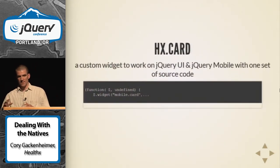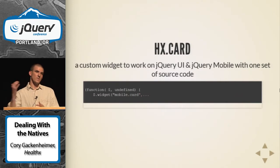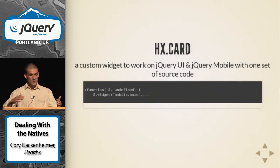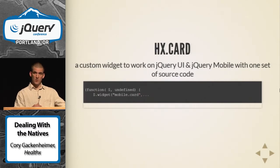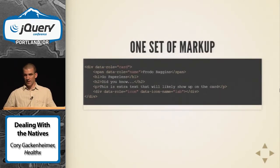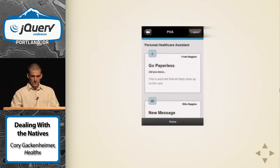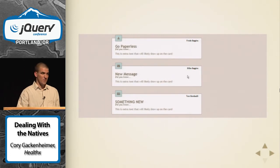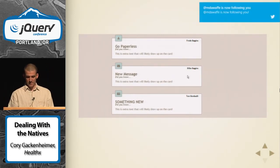At HealthX we have a content delivery system where if you have a new claim paid to you, we notify the user with a card. We built one widget that works for both our jQuery Mobile pages and our jQuery UI desktop pages — one set of markup run through one widget instance. On mobile, the card renders one way; on the desktop grid, it renders differently.